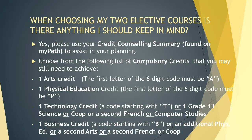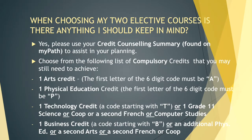Many students have emailed or booked appointments regarding their credit counselling summary and electives noted as compulsory courses. The reason is that you do need to complete one art credit or one phys ed credit to earn your Ontario Secondary School Diploma. So while it wasn't compulsory in grade 9, these are courses you need to complete to graduate. When you complete your first arts credit or phys ed, it will automatically be recorded as compulsory on your credit counselling summary. If you still have questions, please come see me in the guidance office.